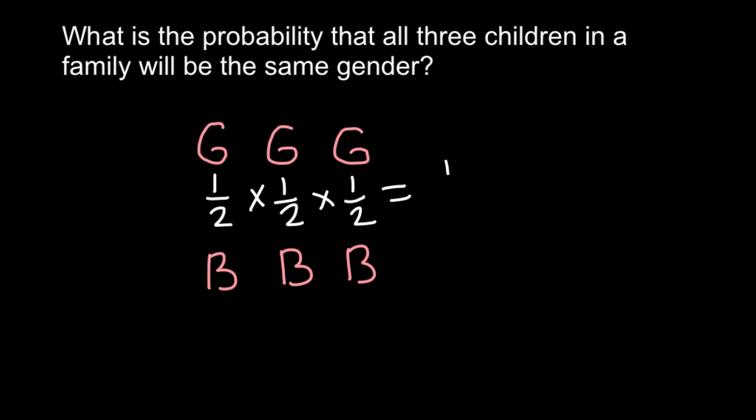And the answer would be one eighth, the probability of such an event. And the same rule applies to three boys. Every time a family would have a child, the probability that this is going to be a boy would be one half. So once again, here we have three independent probabilities that should happen in this family simultaneously, and that means we have to use the product rule. And the answer would be also one eighth.